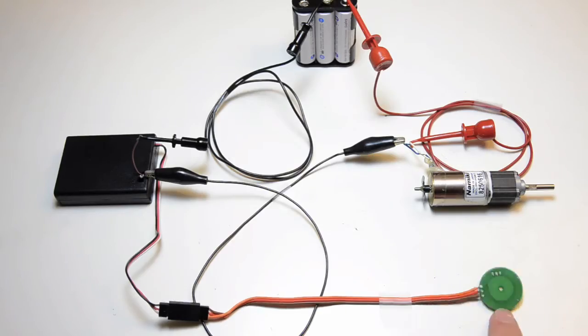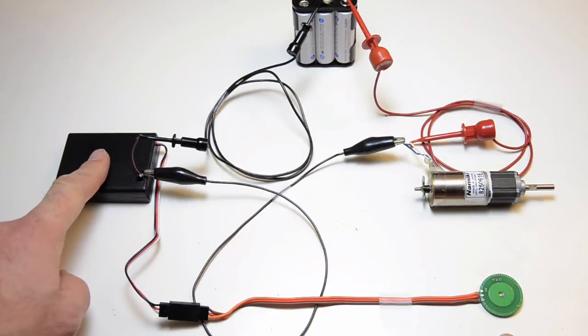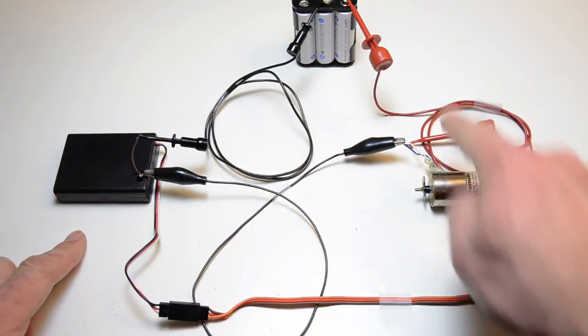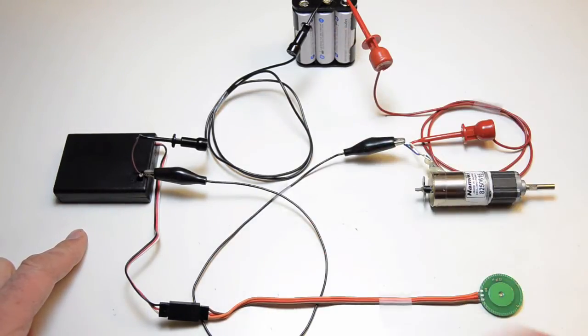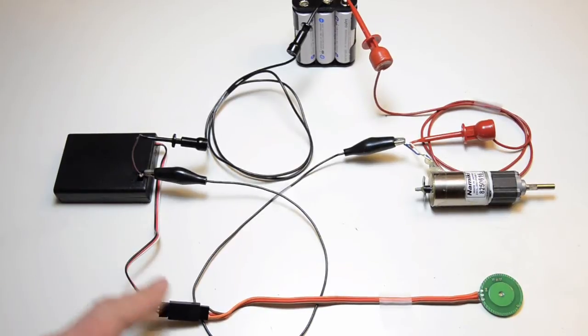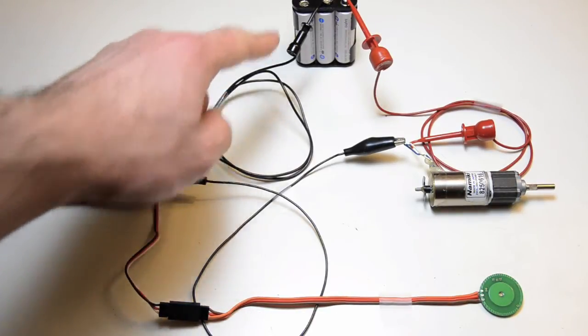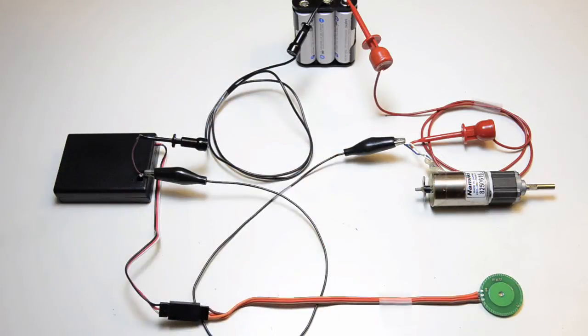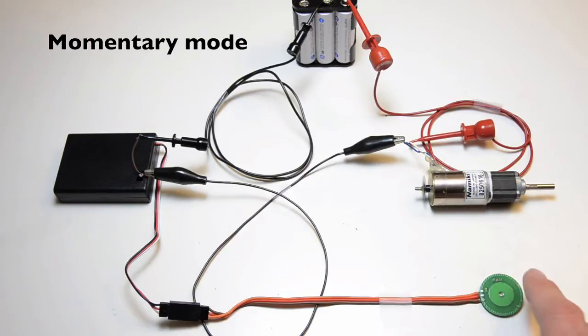Now you get to see the switch switching an actual load. So this is the battery for the switch, that's the motor and this is the battery for the motor. This battery supplies voltage to the switch and this battery supplies voltage to the motor. You can easily have one battery that supplies power to both.